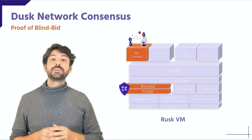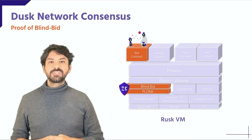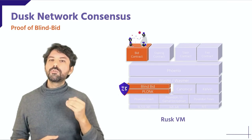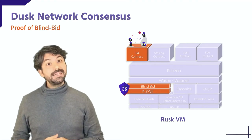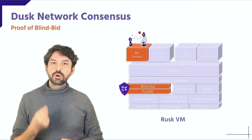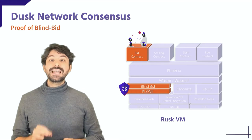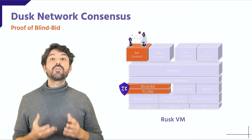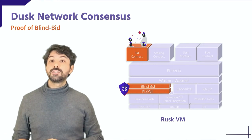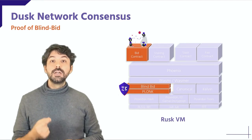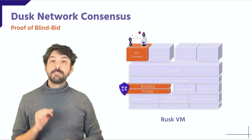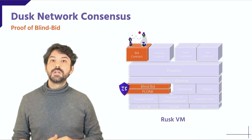The Proof of Blind Bid algorithm governs the generation phase while protecting the privacy of the generators. As such, it can be considered a cryptographic evolution of Proof of Stake, sharing much of its mechanisms in practice, but with the additional benefit of confidentiality. The satisfaction of the confidentiality condition required Dusk Network's research team to develop an advanced zero-knowledge proof system, as no existing proof system had the capability of combining proofs of a variety of statements with the performance needed to process a satisfying number of transactions per second. This research culminated with the release of the most advanced implementation of the Plonk proof system to date.